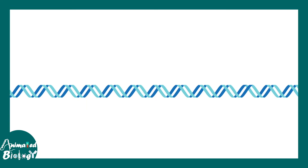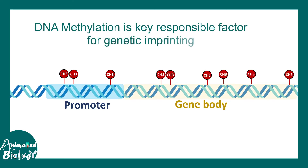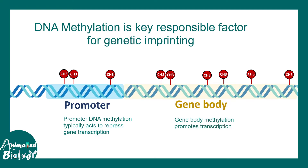The molecular basis of imprinting can be understood by understanding DNA methylation. DNA methylation can happen in the promoter region of a gene or in the gene body, and it is the key responsible factor for imprinting. Promoter methylation typically acts to repress gene transcription, while gene body methylation may promote transcription. So methylation is highly contextual — whether it leads to gene activation or inactivation is also contextual.